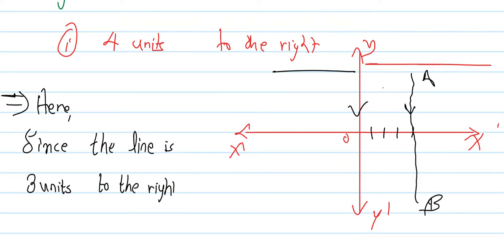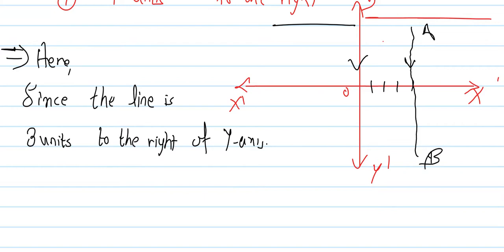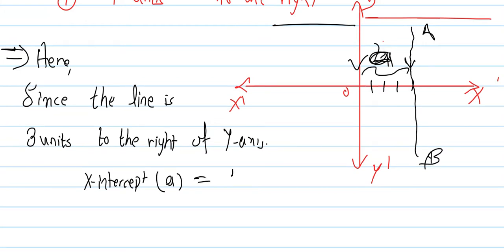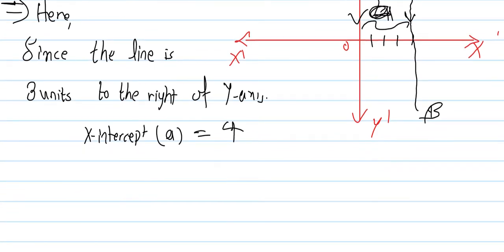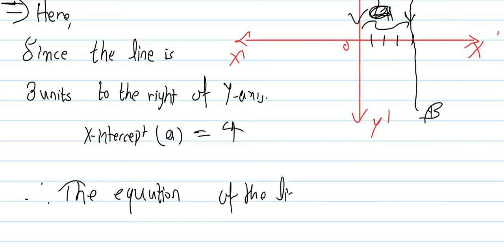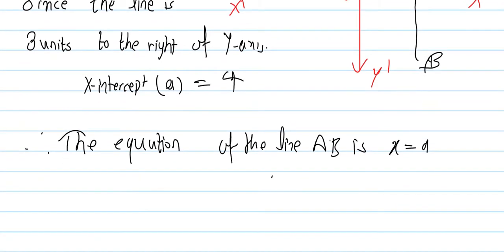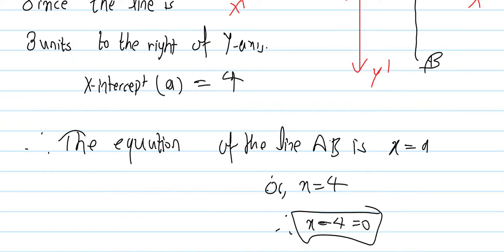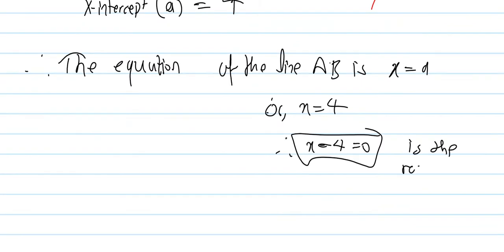Since the line is four units to the right of the y-axis, the x-intercept a equals 4. Therefore, the equation of the line AB is x equals a, so x minus 4 equals 0 is the required equation.